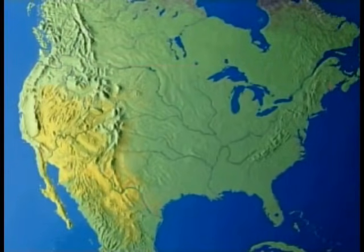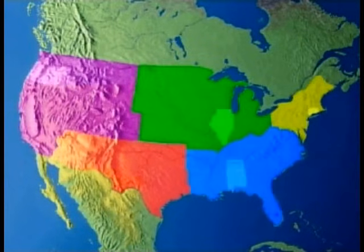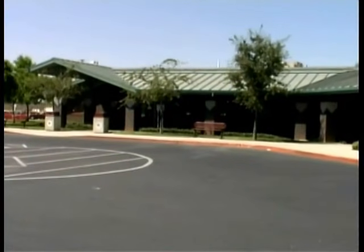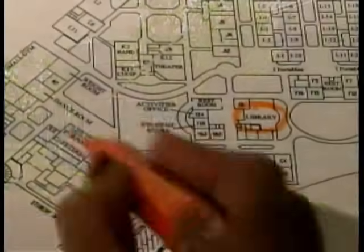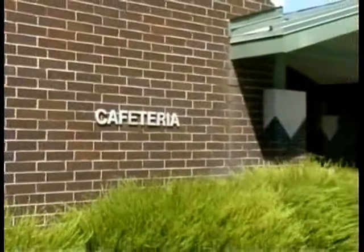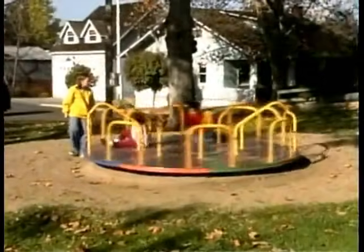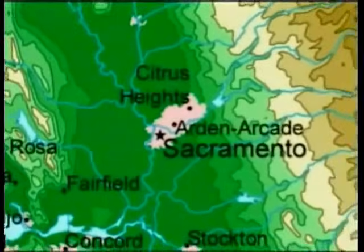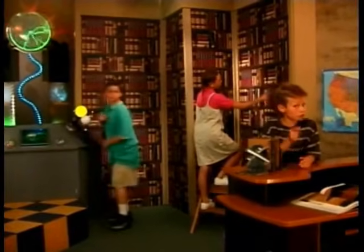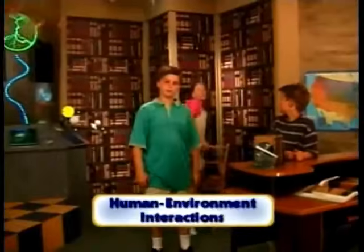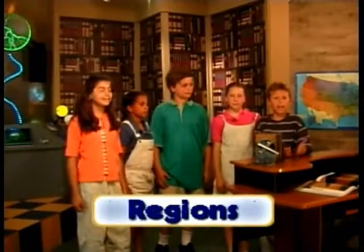Since regions come in all different shapes and sizes, you can be in several regions at the same time. Even your own school can be split into regions — the library is one small region of your school, and the cafeteria is another. You live in a neighborhood, a city, a county, and a state — and all of these are part of a larger region: your country, the United States. There is a lot to learn about geography, but if you study place, location, human-environment interaction, movement, and regions, you'll be on your way to becoming a geography expert too.